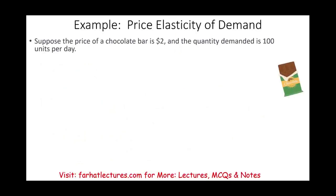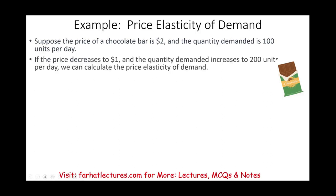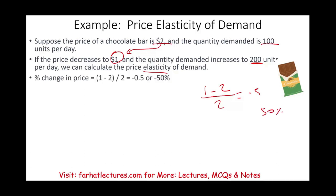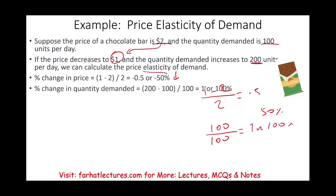Let's assume we are selling chocolate bars. The current price is $2 and the quantity demanded is 100 units per day. We decide to reduce the price from $2 to $1, and the quantity demanded increases to 200 units per day. Let's compute the price elasticity of demand. First, the percentage change in price: $1 minus $2 divided by $2 equals 50% — the price dropped by 50%. The change in quantity: 200 minus 100 divided by 100 equals 100%.